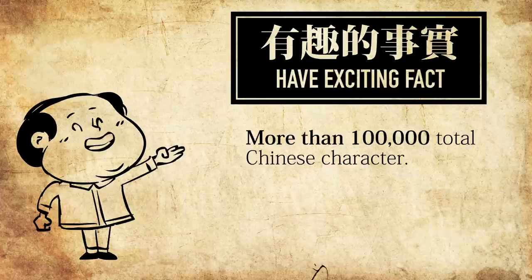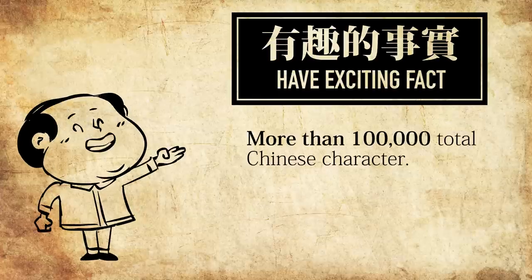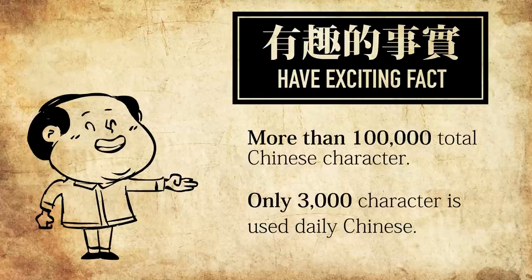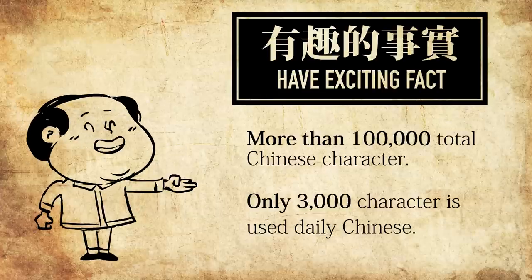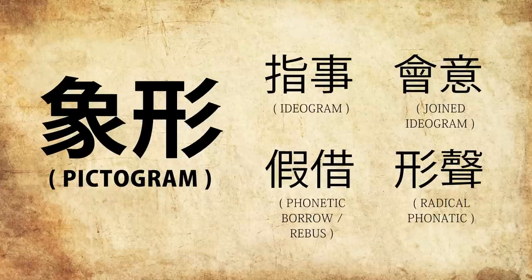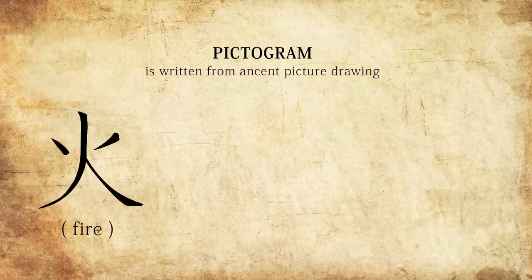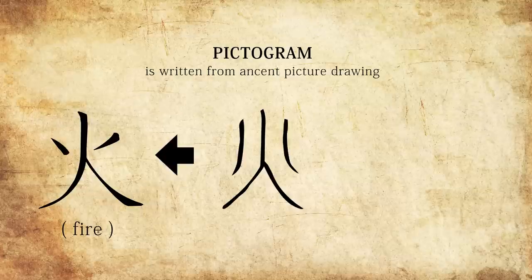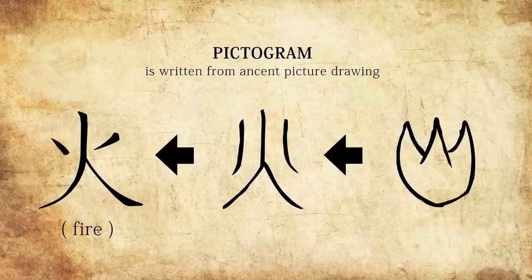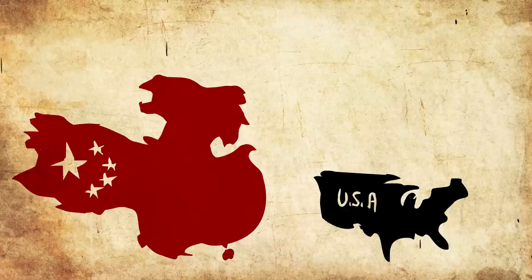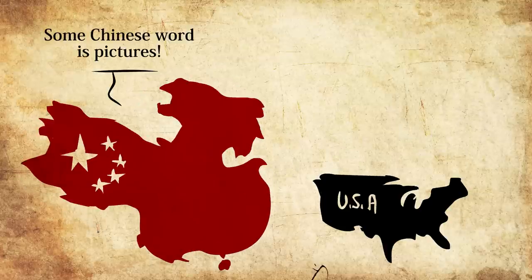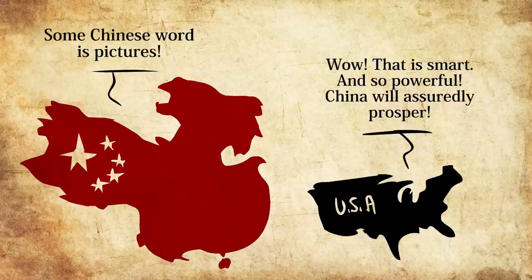In the Chinese language, the word in the writing is a character. In some characters, it's a pictogram — a character that comes from a picture drawing. Now this makes Chinese so easy, like a math portion of America's SAT, okay?